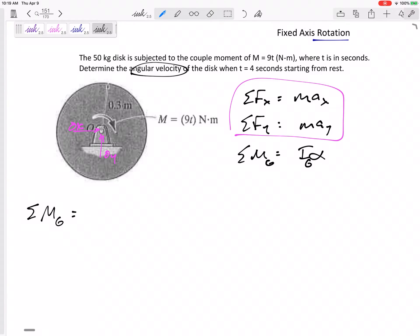Let's sum my moments about G. Have I defined alpha before? Do I need to worry about the direction? You can define your axes any direction you want the first time, but remember to stay consistent. Because this moment is going clockwise and it starts from rest, I know everything's going clockwise, so I'm going to sum my moments clockwise.